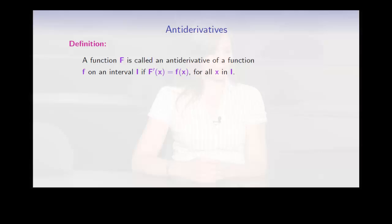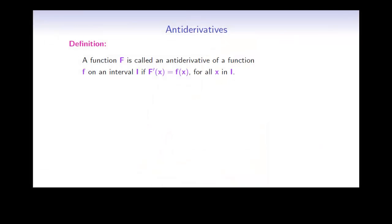So let's start by taking a closer look at the definition of an anti-derivative. A function, capital F, is called an anti-derivative of a function, small f, on an interval I, if the derivative of capital F is equal to small f of x, for all x in that interval.